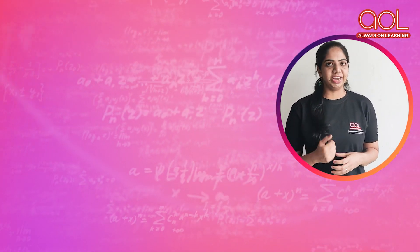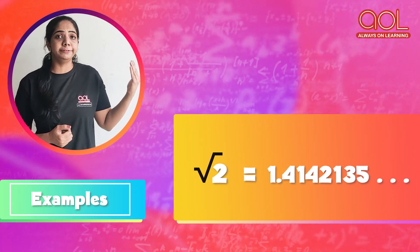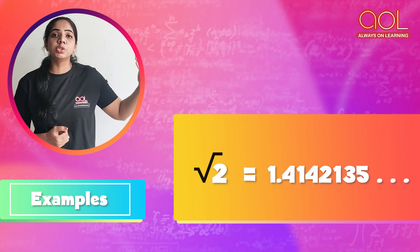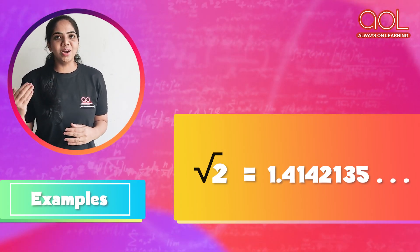Now, let us take another example. What is the square root of 2? You can try it out in your calculator. You will find it has 1.4142135 and so on. It is again non-terminating and non-recurring.